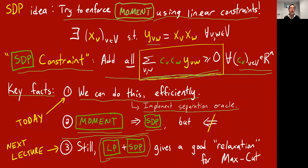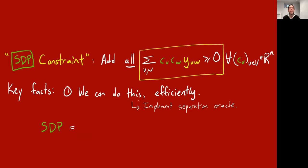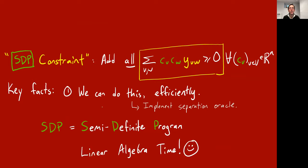One that can, given some n squared numbers y, either check that all infinitely many of these inequalities are satisfied, in which case it's done, you found y's, or it can find a violated inequality, which is to say it can find some real numbers c which make this inequality fail. I claim, given these y's, there's a polynomial time algorithm that can do that task. And this polynomial time algorithm comes from linear algebra, and this SDP really stands for semi-definite program. And this notion of positive semi-definite matrices is exactly what you need.